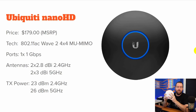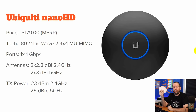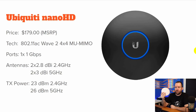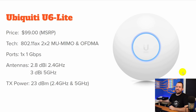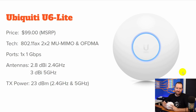The transmit power on this one is 23 dBm in the 2.4 GHz and 26 dBm for 5 GHz. Our next contender is the Ubiquity U6 Lite. This is the first Wi-Fi 6 access point on our list. MSRP for this access point is $99.